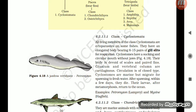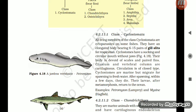Section 4.2.11.1: Class Cyclostomata. All living members of class Cyclostomata are ectoparasites on some fishes. They have an elongated body bearing 6 to 15 pairs of gill slits for respiration. Cyclostomes have a sucking and circular mouth without jaws. Their body is devoid of scales and paired fins. Cranium and vertebral column are cartilaginous. Circulation is of closed type. Cyclostomes are marine but migrate for spawning to fresh water. After spawning, within a few days, they die. Their larvae, after metamorphosis, return to the ocean.